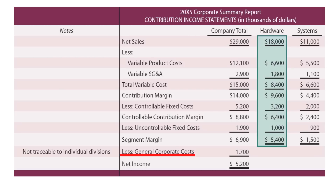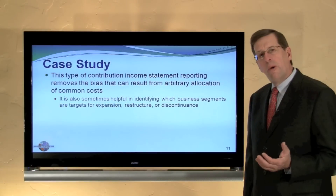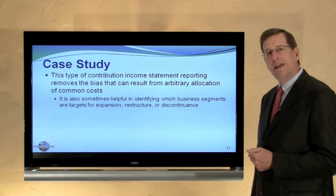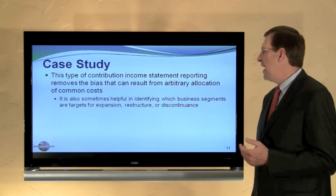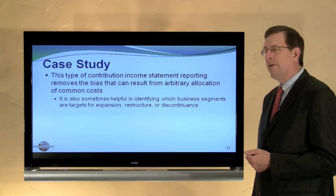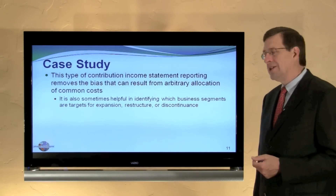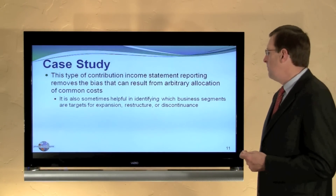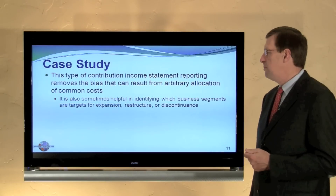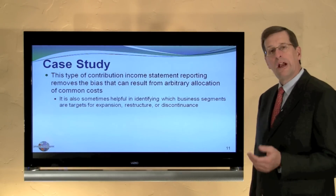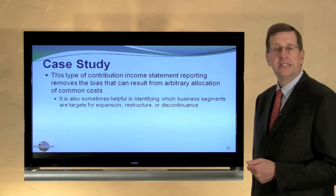The general corporate expenses we do not trace or assign to a particular division. The point of the case study was to show how contribution income statements can remove bias that can result from arbitrary allocations of common cost. It is also sometimes helpful in identifying which business segments are targets for expansion, restructuring, or even discontinuing.